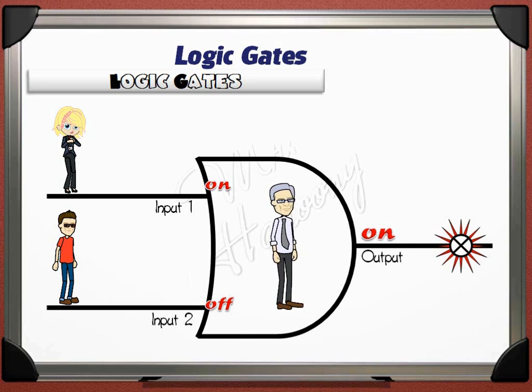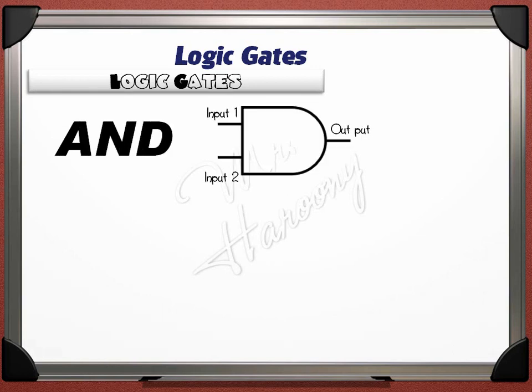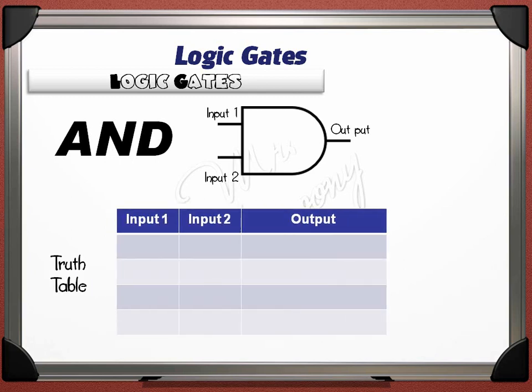The first logic gate is the AND gate. This is its symbol, and you must know how to draw it. The AND gate cannot give an ON signal on the output unless input 1 AND input 2 both give ON signals. Each logic gate has a truth table — a table that describes the signal on the output for different cases of inputs. The first case: when both inputs are OFF, the output is OFF.